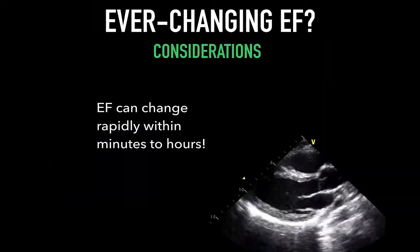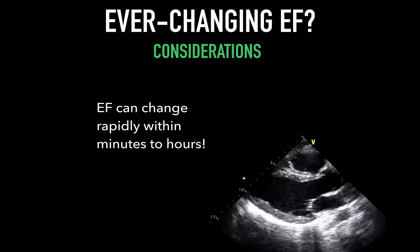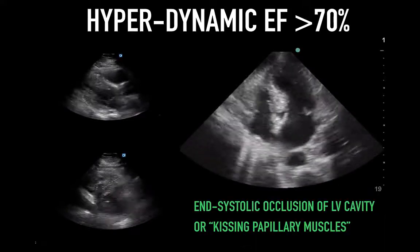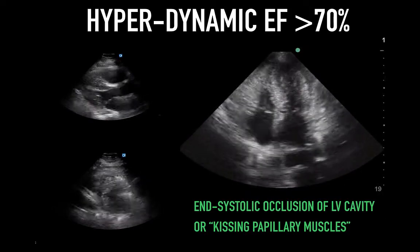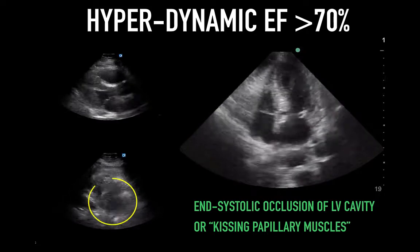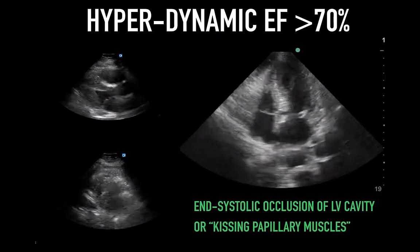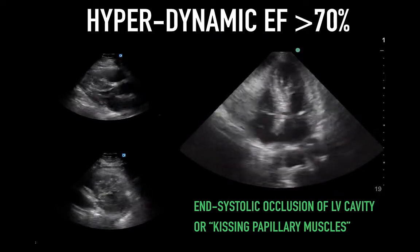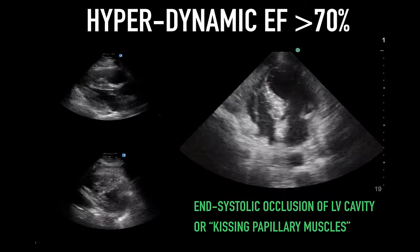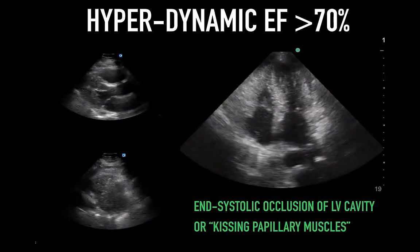Remember that EF can change rapidly within minutes to hours and should be reassessed if there's a significant change in the patient's clinical condition. In this case, we see a hyperdynamic LV where we have end-systolic occlusion of the LV cavity, or kissing papillary muscles. In most cases, a poorly acquired parasternal long axis can easily make you believe this is the case. That's why I would encourage you to obtain multiple views and ensure that you have clear endocardial resolution.